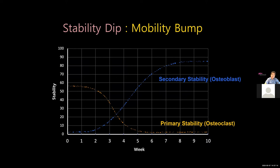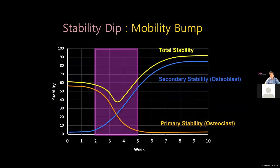Looking at the conventional stability graph — a very famous one — we start with primary stability, determined by osteoclast activity, beginning high but decreasing. We also have secondary stability, determined by osteoblast activity and bone maturation/remodeling. These two combine into total stability. Around two to five or six weeks, because osteoclast activity increases but osteoblast activity hasn't caught up yet, we call this the 'implant stability dip,' also known as the dangerous zone. My professor told me: do not touch your implant during that time. Stability dip essentially means a mobility bump.